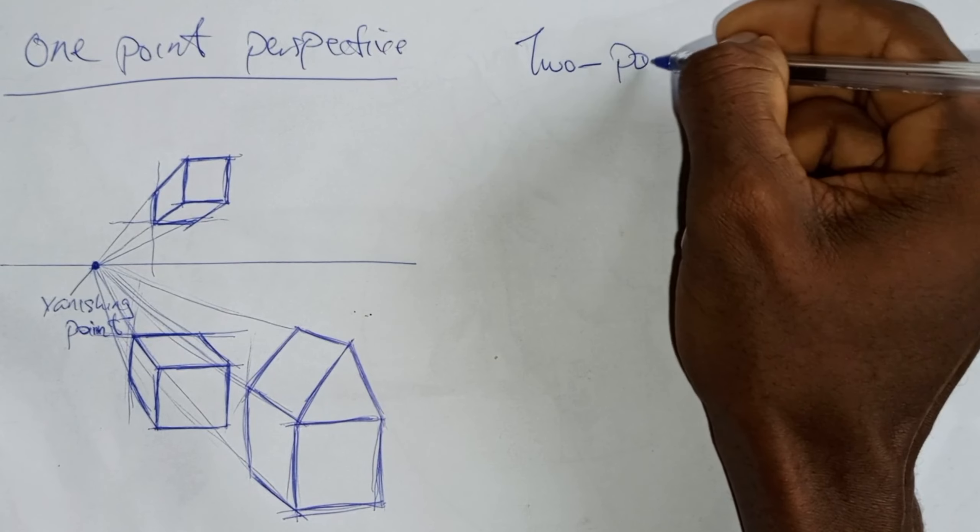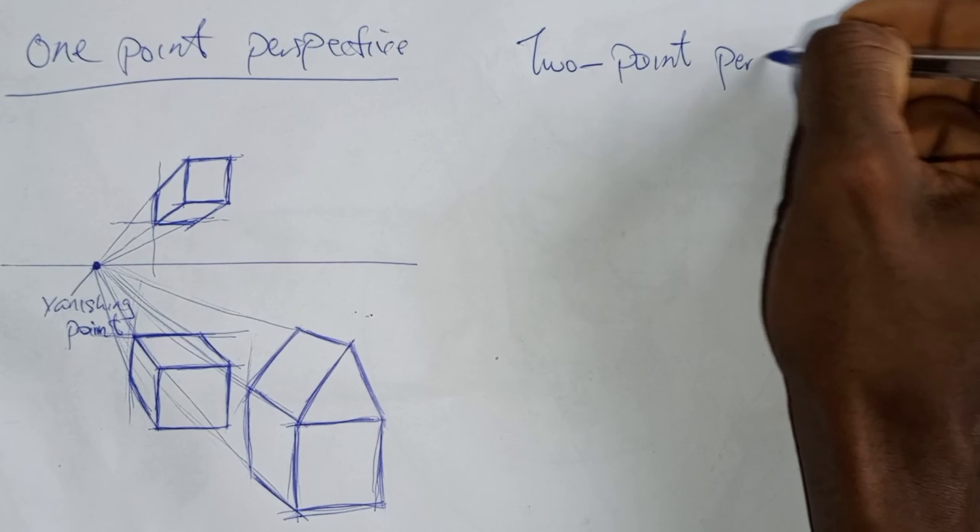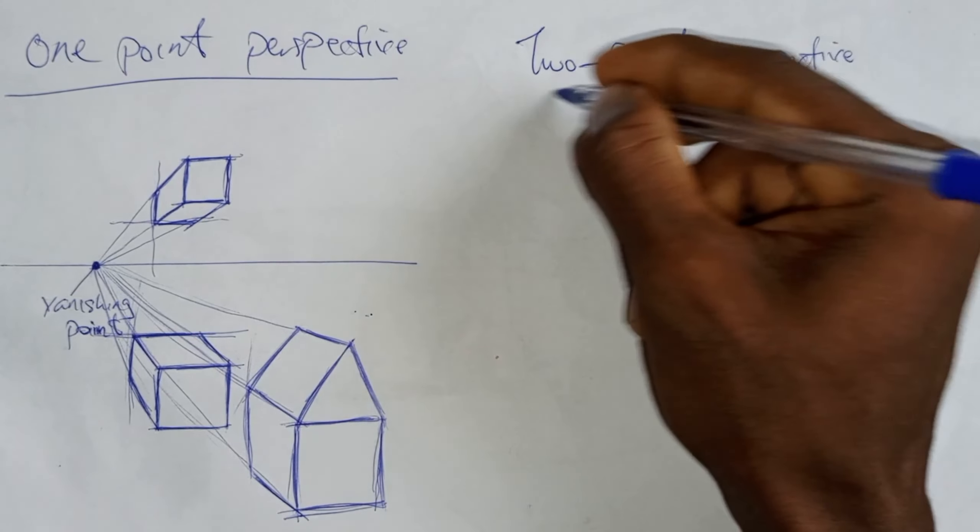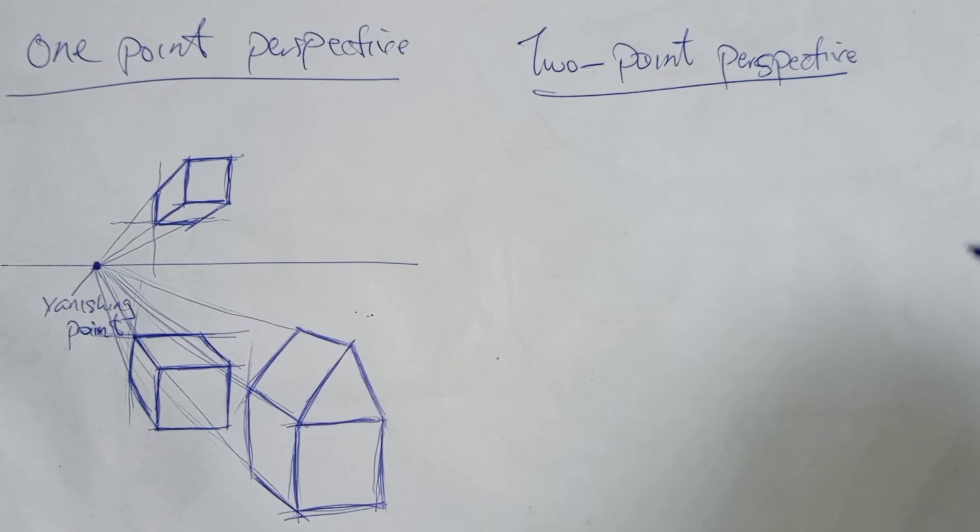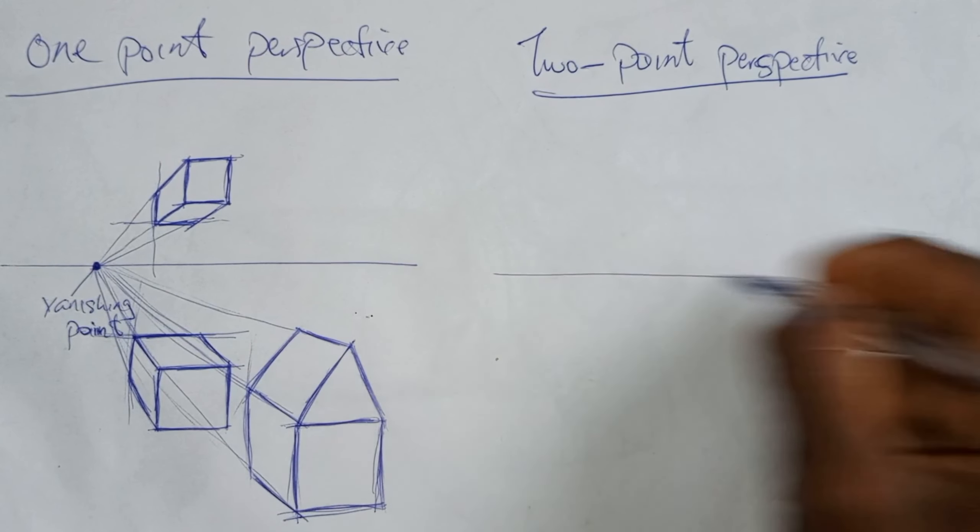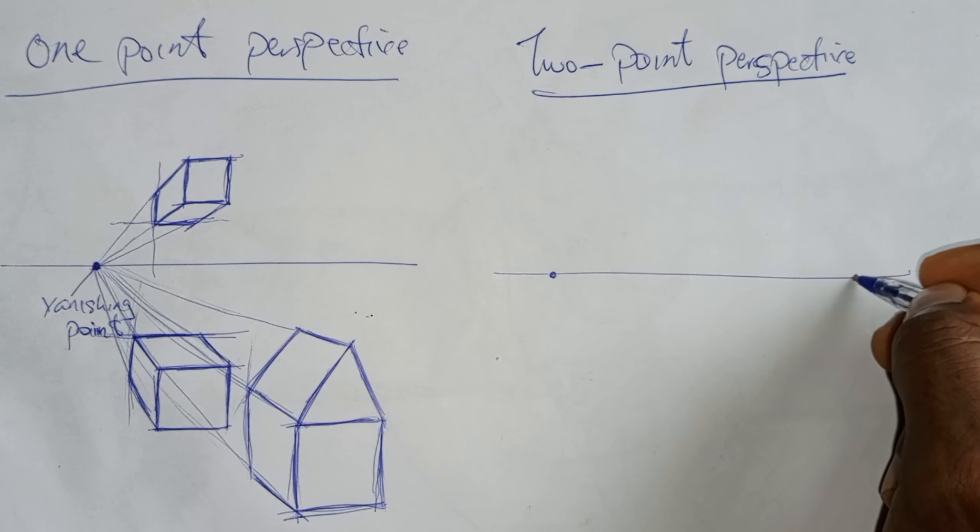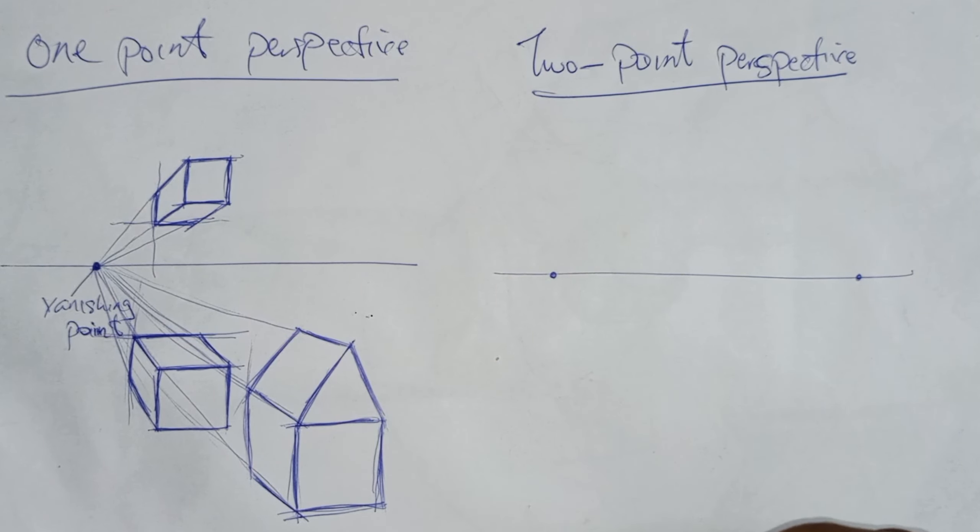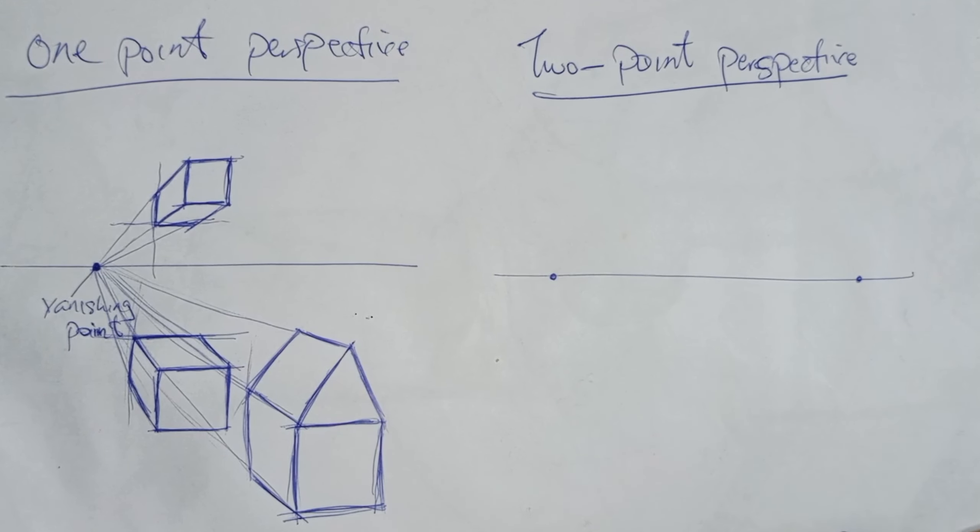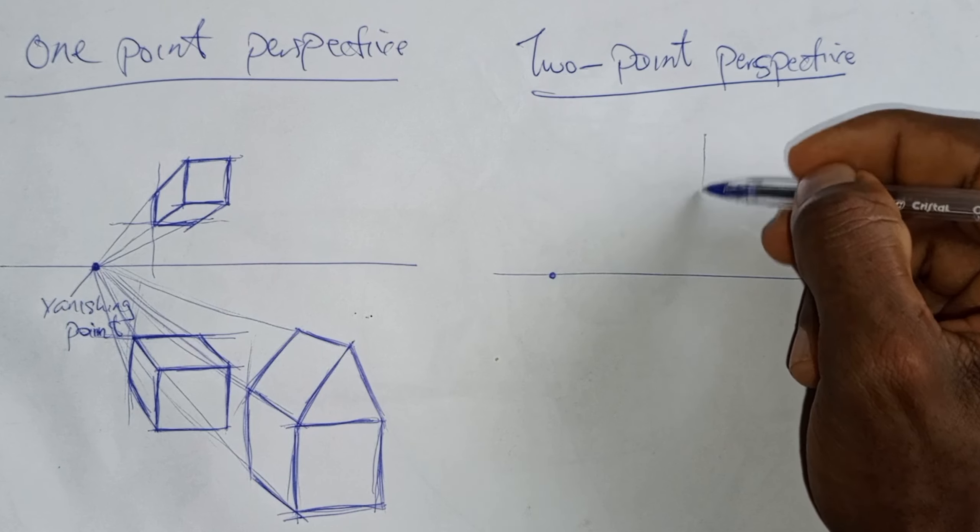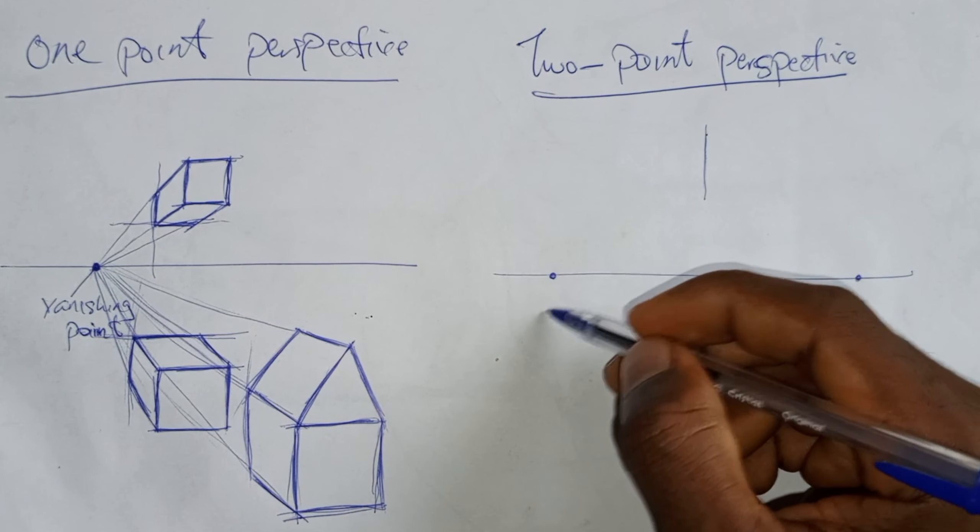Next, let's talk about two-point perspective. Two-point perspective is when you have two vanishing points, one on either side of the horizon line. This is great for creating a sense of depth and width, and it's often used in drawings of buildings, rooms, and other things where you want to create a sense of space.